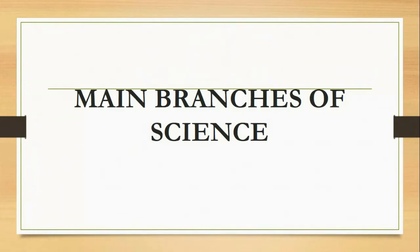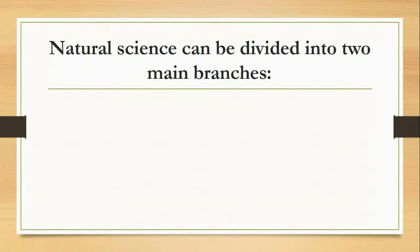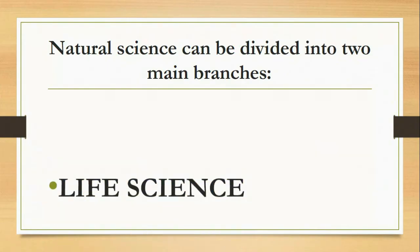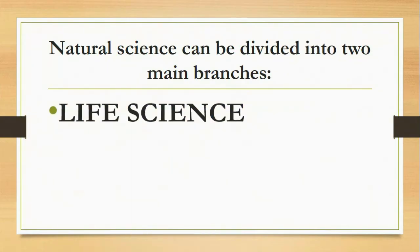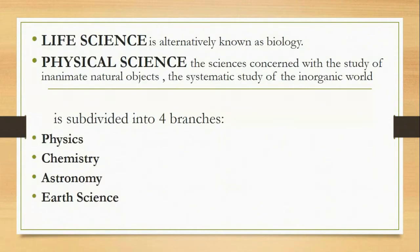Our topic in this presentation is the main branches of science. Natural science can be divided into two main branches: life science and physical science. Life science is alternatively known as biology, while physical science is concerned with the study of inanimate natural objects — the systematic study of the inorganic world. Physical science is subdivided into four branches: physics, chemistry, astronomy, and earth science.